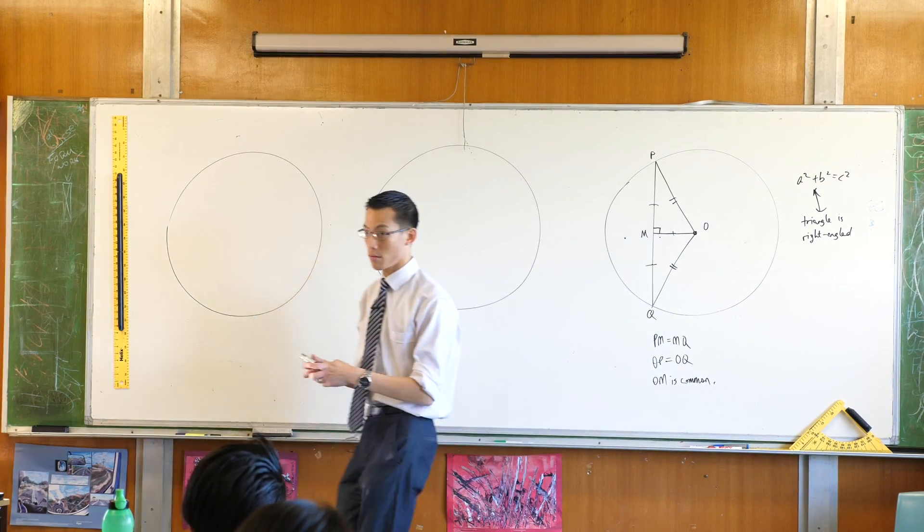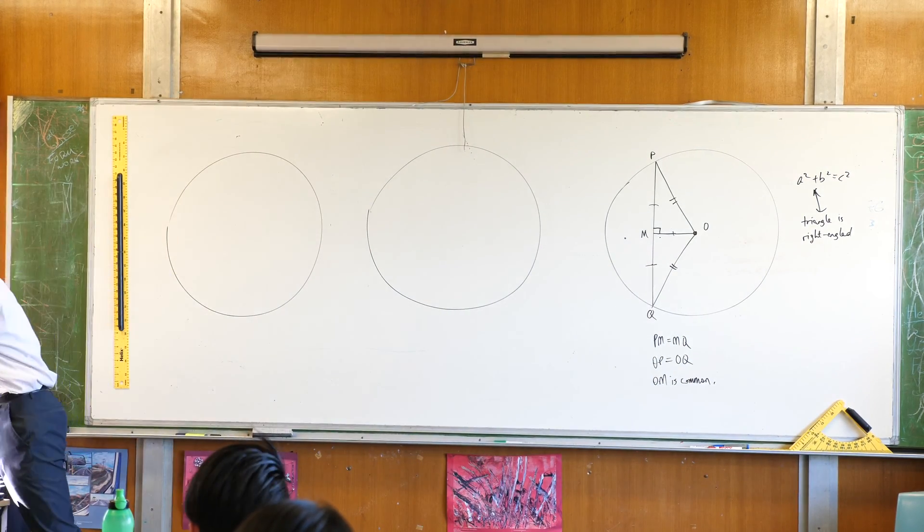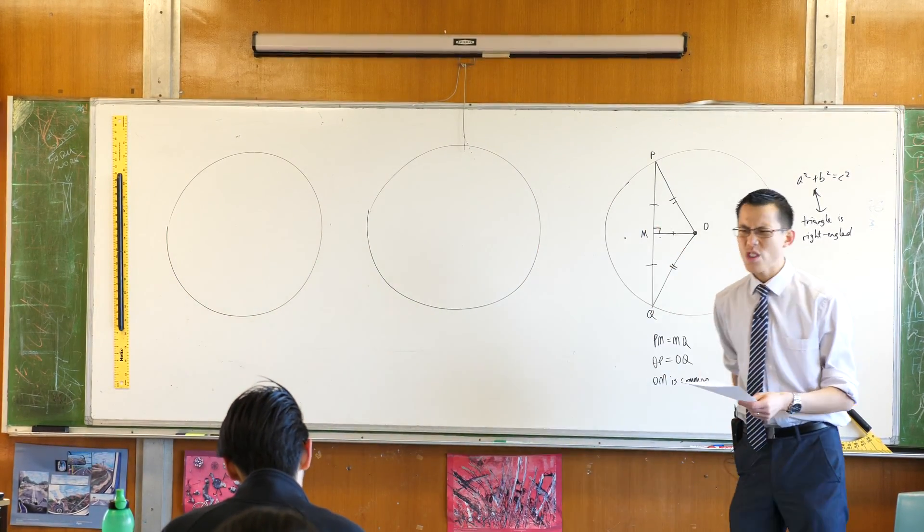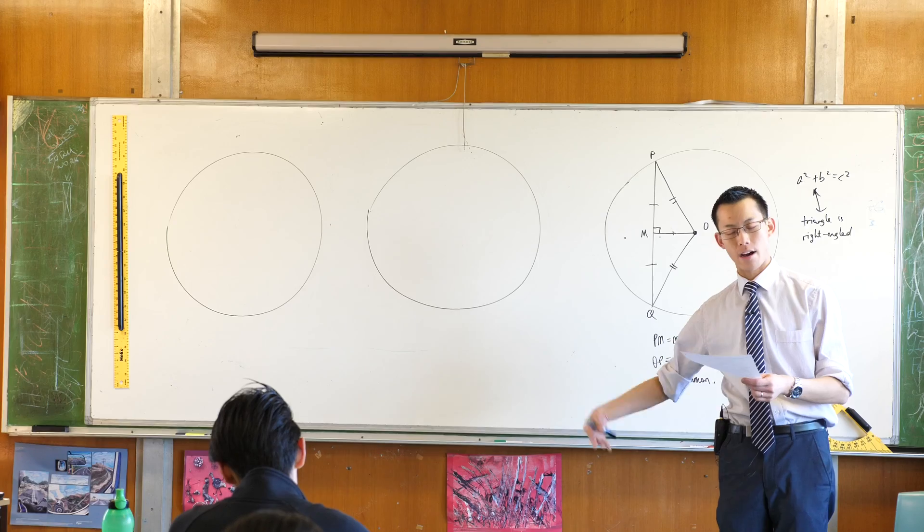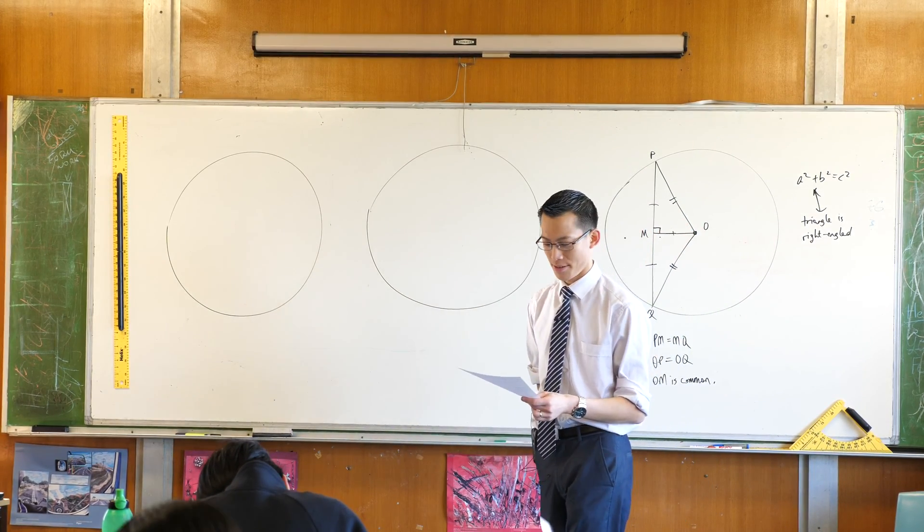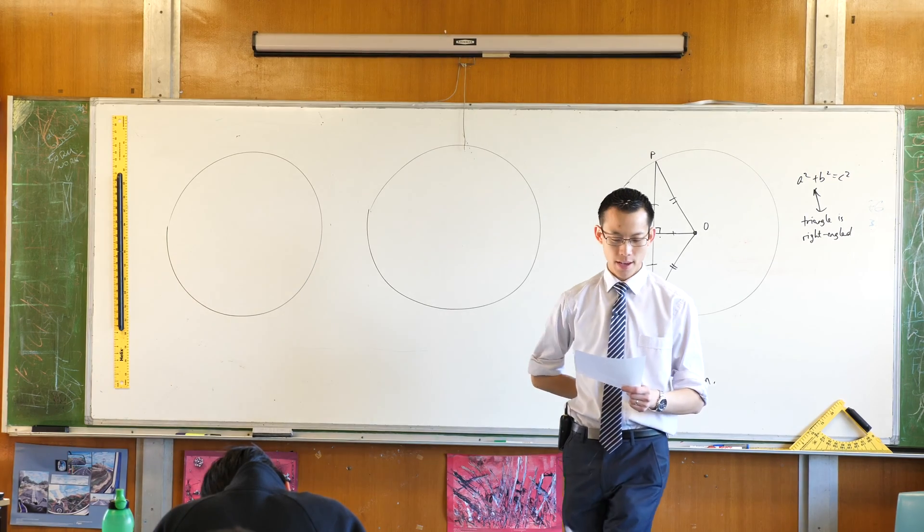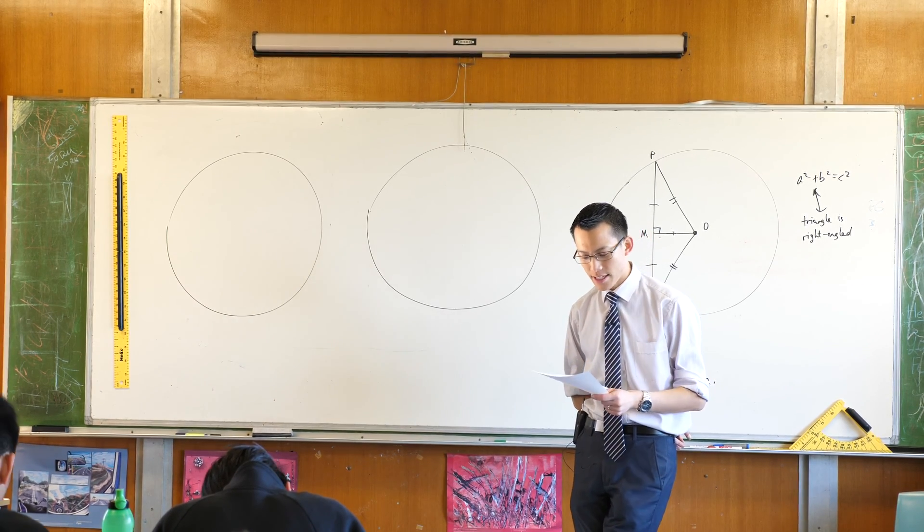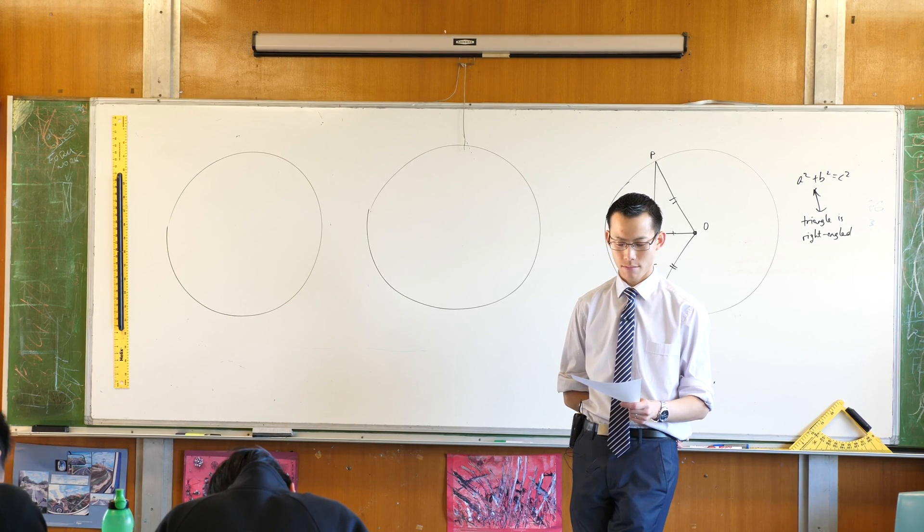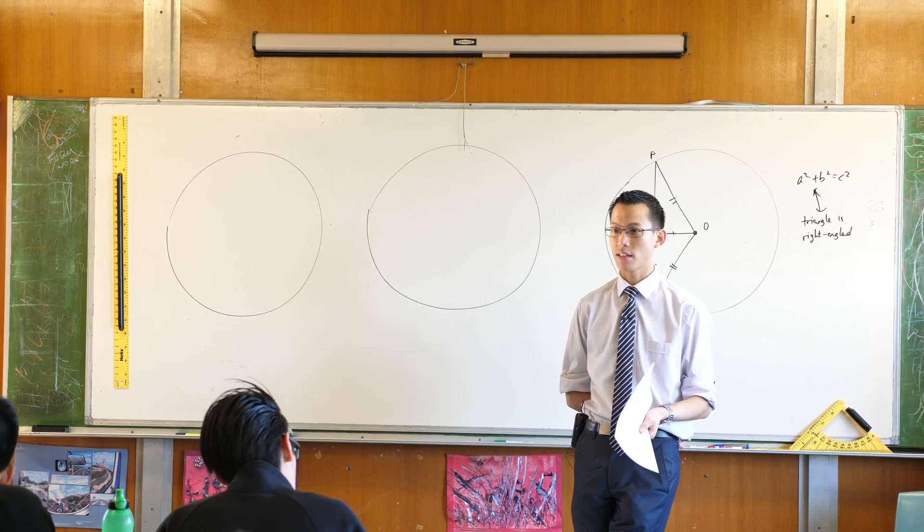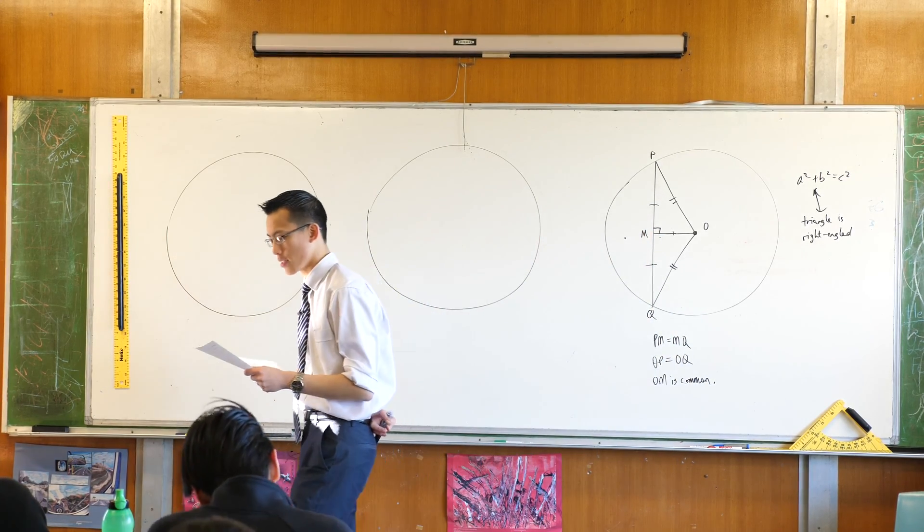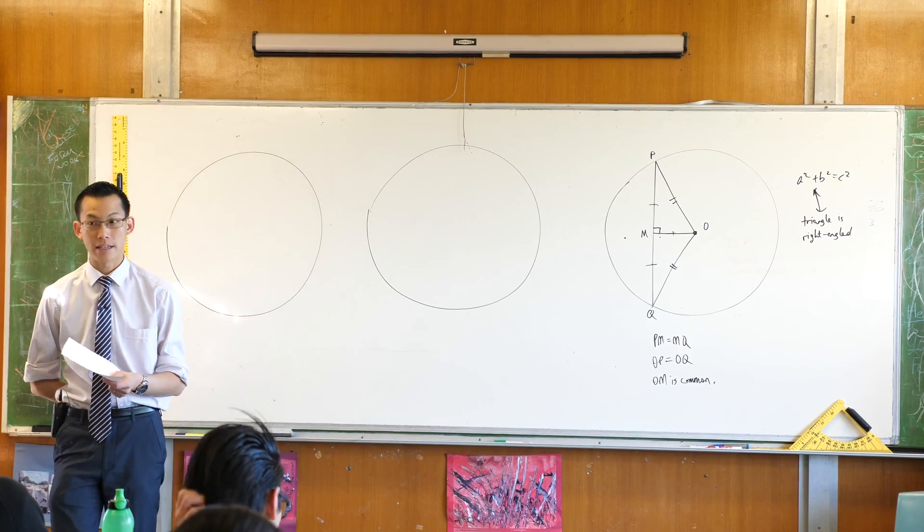So there are more than one way to say these, but here's the way that I would say property three. The perpendicular, and we're used to using this as an adjective, but I'm going to use it as a noun. The perpendicular from the center to a chord bisects the chord. It chops it in half. Does that make sense? I'll say it again. The perpendicular from the center to a chord bisects the chord.